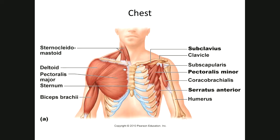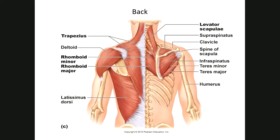You may have dissected cats in another class. You'll notice they're not built like humans — humans stand upright. In cats, the pectoralis major covers the whole anterior surface, and the major and minor are arranged differently. In the human, the pectoralis minor is on the opposite side compared to the cat.